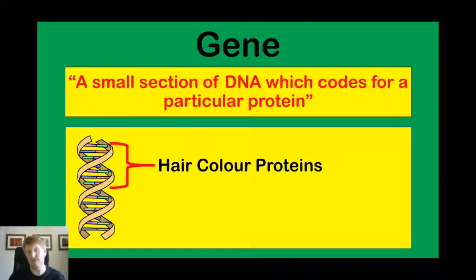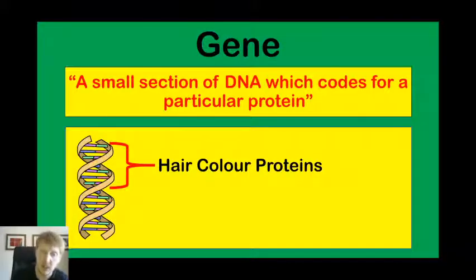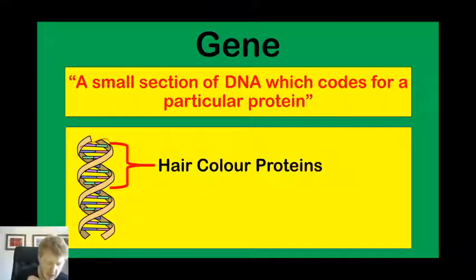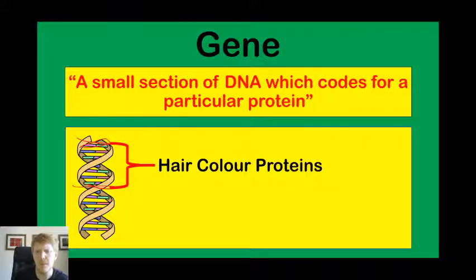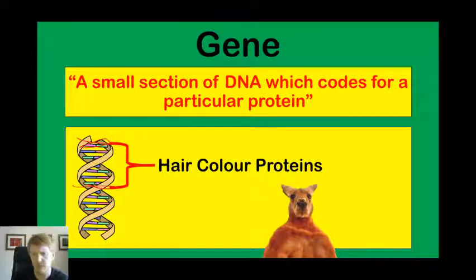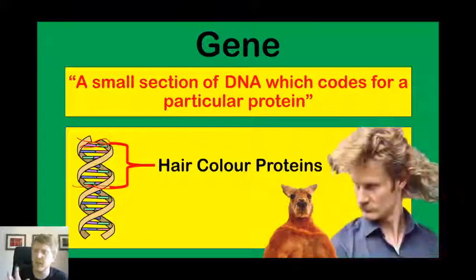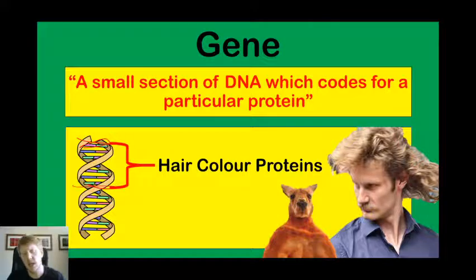Starting with gene. A gene is a small section of DNA which codes for a particular protein. For example, just on this DNA strand here you can see a hair colour gene. This section of the DNA codes for proteins that build up to hair colour. You might make proteins that get your glorious red hair like this red kangaroo, or a stunning Aussie mullet, sort of blonde mullet, just like this gentleman over here. This is what a gene is.